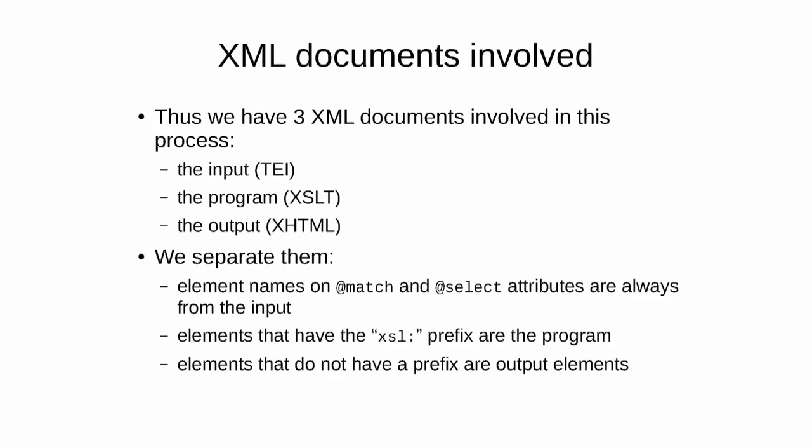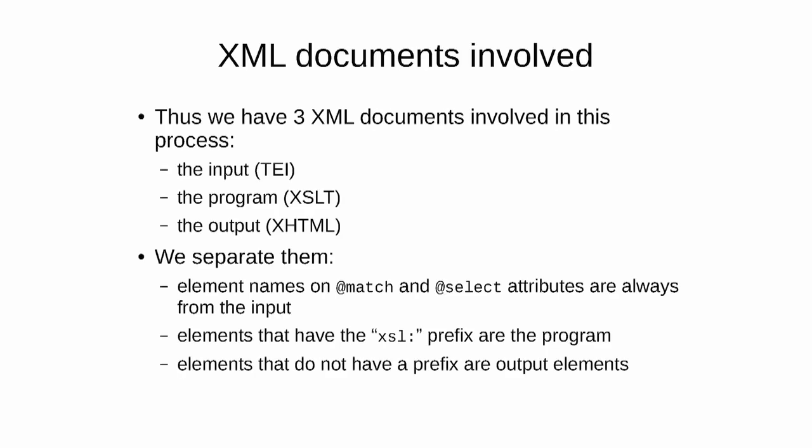It's worth keeping in mind that we have three XML documents involved in this process. The first is the input document — in our case, TEI. The second is the program itself, the XSLT stylesheet, which we're learning how to write now. And last is the output document, which in this case is going to be XHTML. The question is: how do we differentiate which bits of our program are in which language? All of the element names in the match and select attributes are from the input document and so are in TEI. All of the elements that start with the xsl: prefix are instructions to the XSL program. And all of the other elements — the ones that don't have a prefix — are output elements, in this case XHTML.